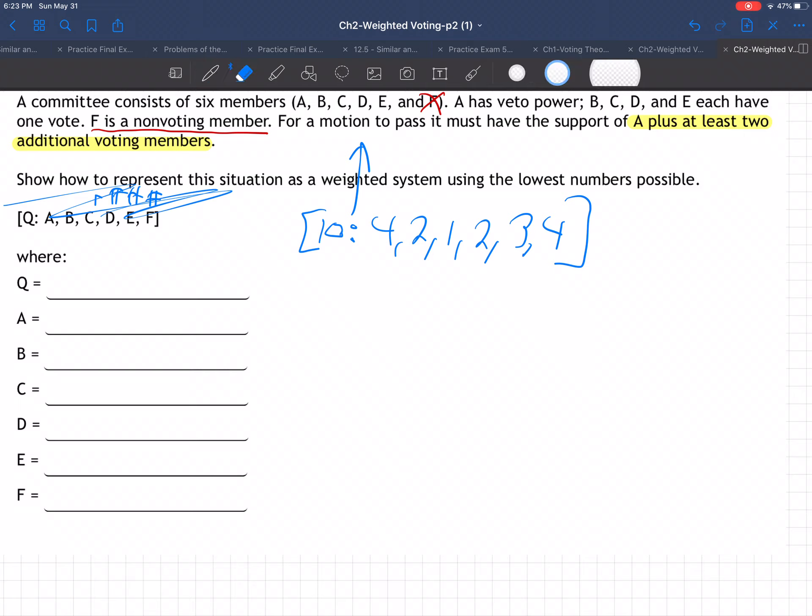Well, what we basically do is we start guessing around and we check our guesses. And they say, you know, lowest numbers possible. So let's start, let's keep it as simple as possible. What do you got to have to pass something? A plus two others.